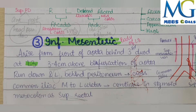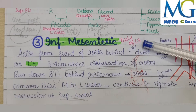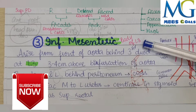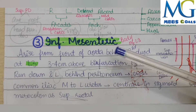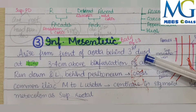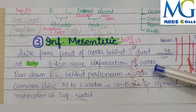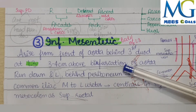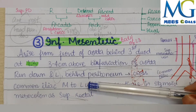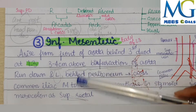We will talk about the inferior mesenteric artery. First, its origin: it originates from the L3 vertebral body. The aorta is in front of its formation and the third part of the duodenum is behind it, at the L3 level.